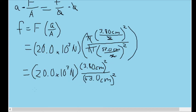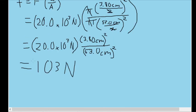So our formula just becomes this. The force times the square of the lower diameter divided by the square of the higher diameter, which gives us a final answer of 103 Newtons rounded to three significant figures.